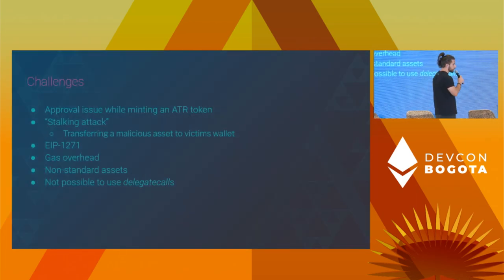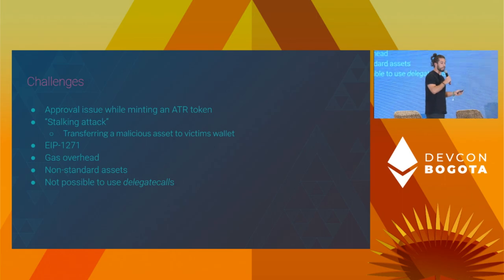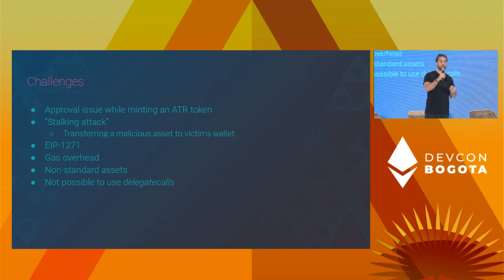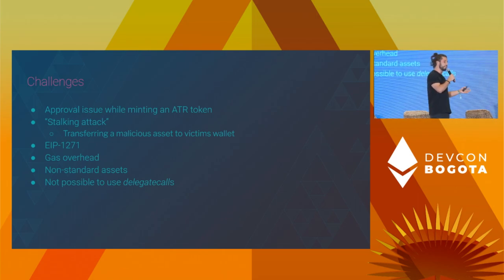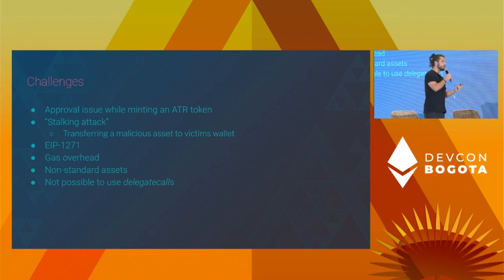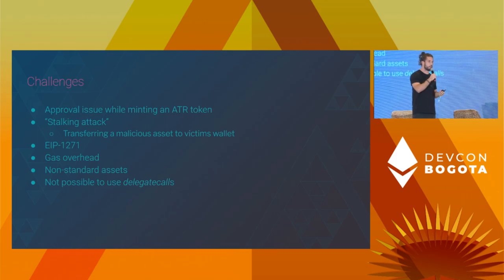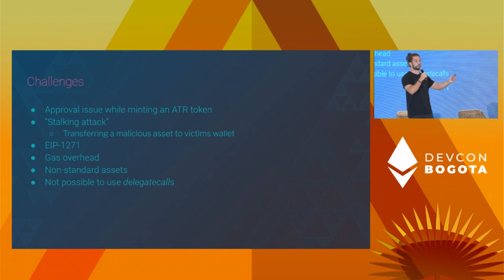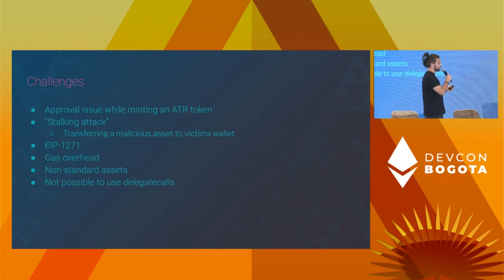We encountered some challenges. First is the approval issue while minting an ATR token. It's pretty obvious that you don't want to mint an ATR token and have approved addresses at the same time, because if you do, the approved address can transfer the asset without even triggering the Guard or the Module. So this is an obvious thing we have to solve.